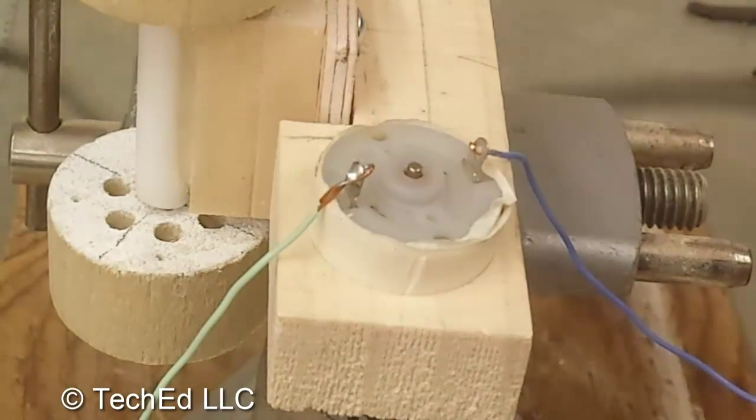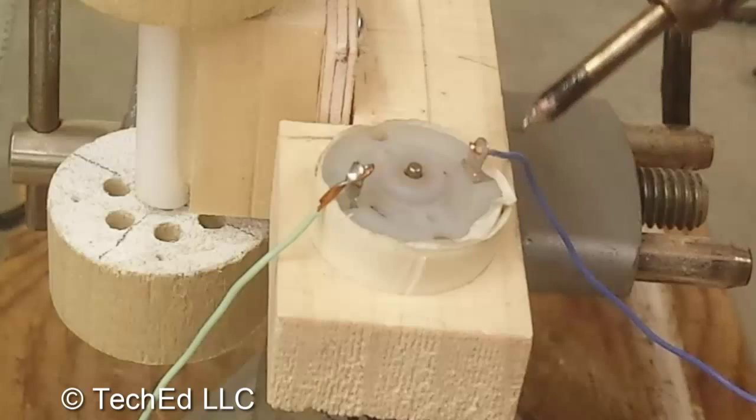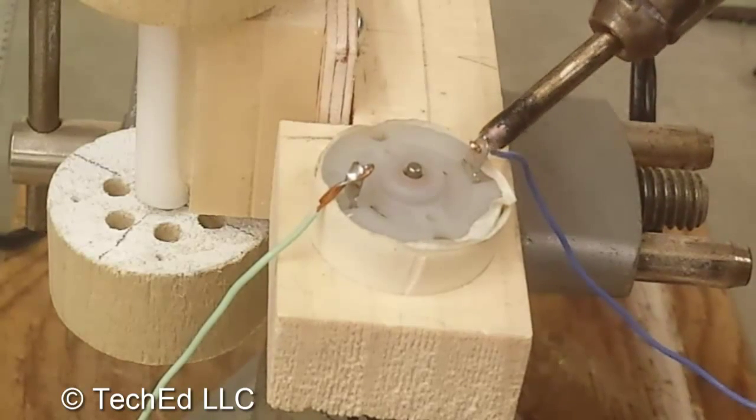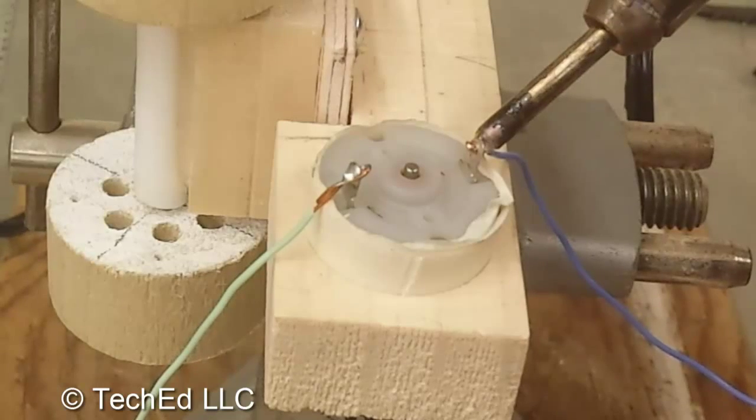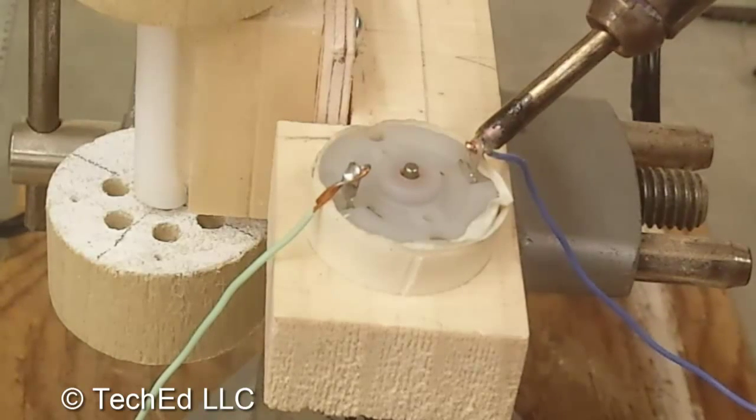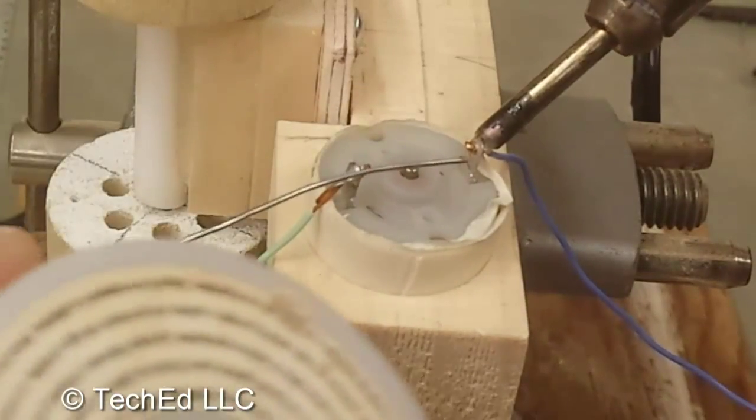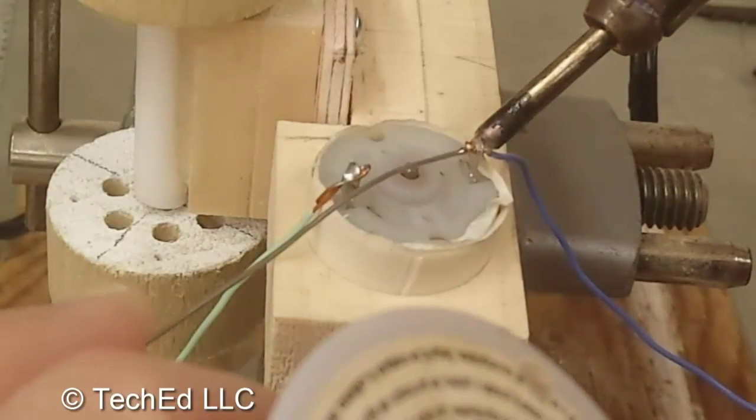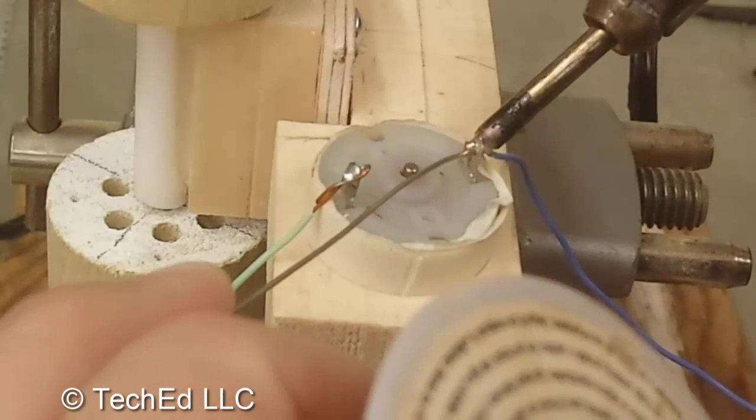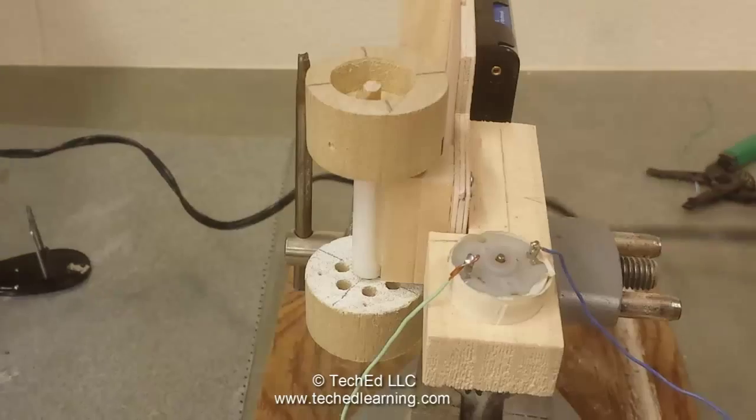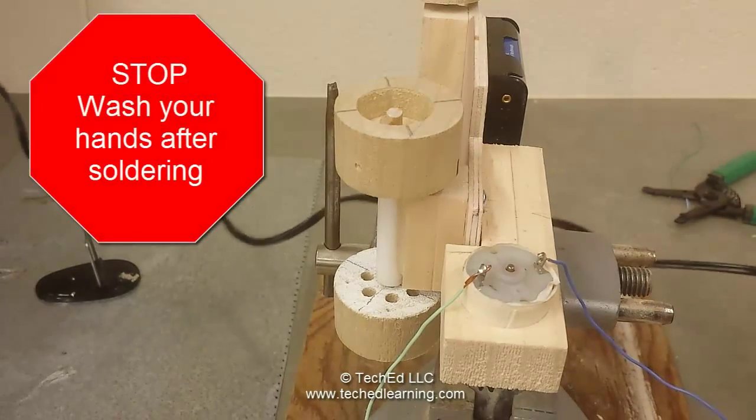Now for the other side I'm going to come in from this side. Again from above the motor. You can let that come in contact for about 10 seconds or so and then bring in your solder and release. And there you go you soldered your wires onto your motor.